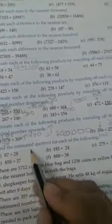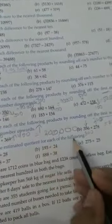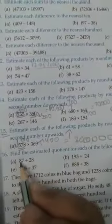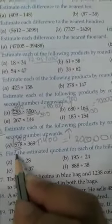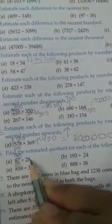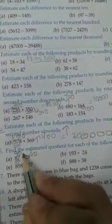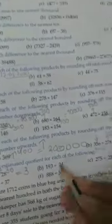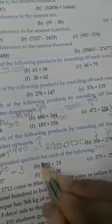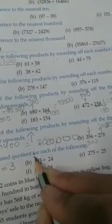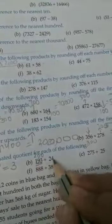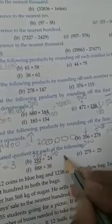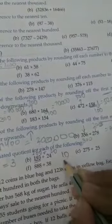Now question number 16: find the estimated quotient for each of the following. Round off 87 — that is 90. Round off 28 — that is 30. Divide: 90 divided by 30 equals 3. Now 193 rounded off is 200, and 24 rounded off is 20. Divide: 200 divided by 20 equals 10.